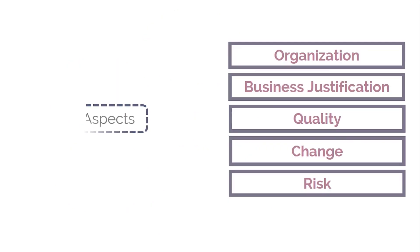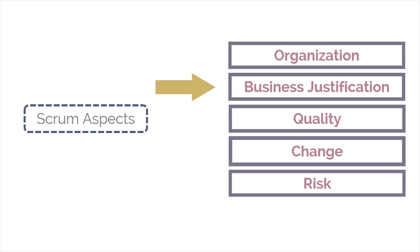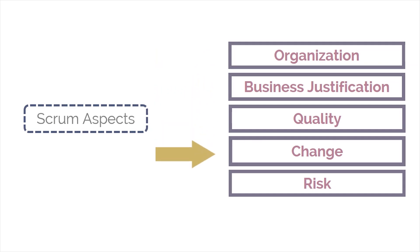There are five Scrum aspects. They are: organization, business justification, quality, change, and risk. These aspects are important considerations to be included in all Scrum projects.